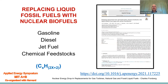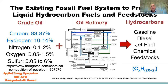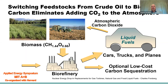Let's turn to the last subject: replacing liquid fossil fuels with nuclear biofuels. The existing fossil fuel system produces liquid hydrocarbons and feedstocks starting with crude oil — widely variable composition with lots of impurities — which is sent through an oil refinery, a very complicated and very large chemical plant, to produce hydrocarbon fuels: gasoline, diesel, jet fuel, and chemical feedstocks.